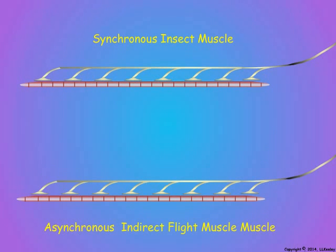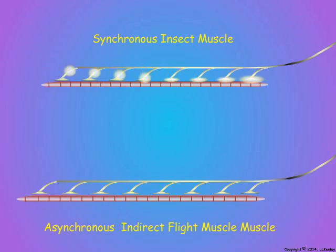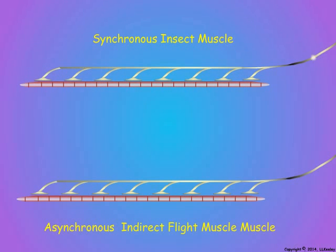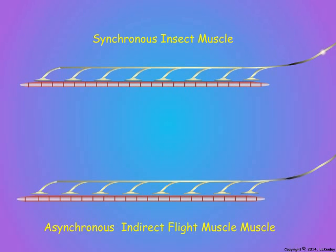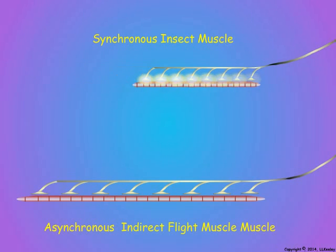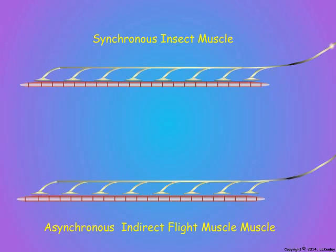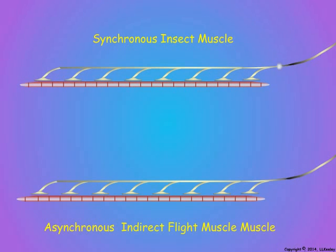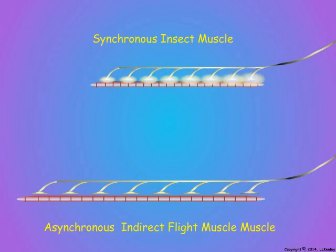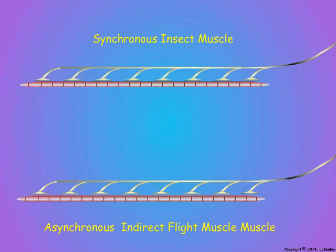With the exception of the insect indirect flight muscles, animal muscles are synchronous in that they contract maximally once for each impulse from a motor neuron. Insects with slow wingbeats in the five to fifty hertz range have synchronous flight muscles.